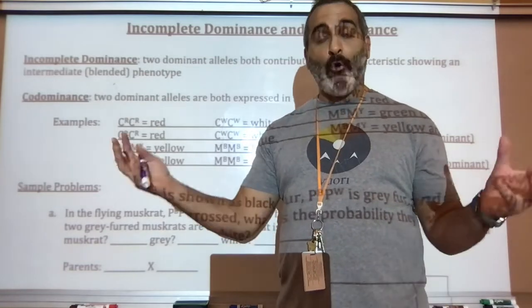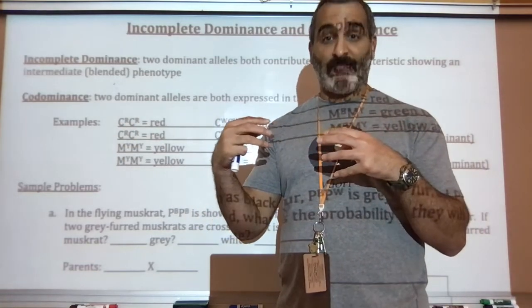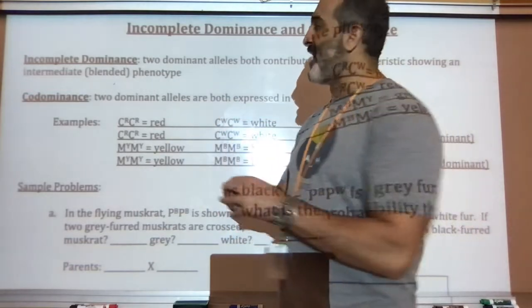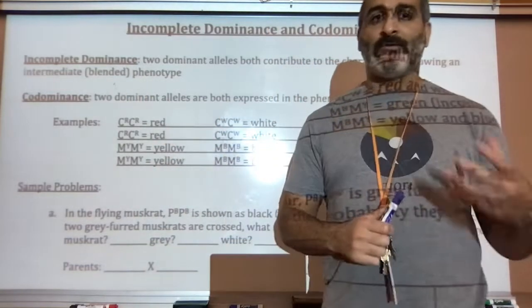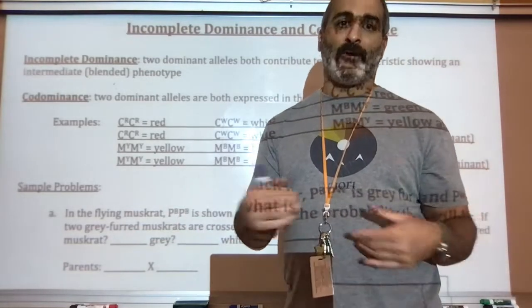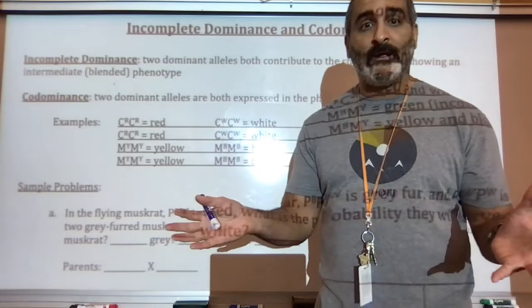So both genes are adding to the overall phenotype or the characteristic, and they meet in the middle. That is what is called incomplete dominance. They call it an intermediate rather than the middle or an intermediate or a blended type of phenotype.